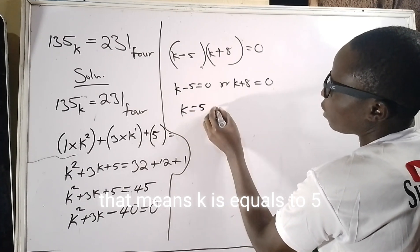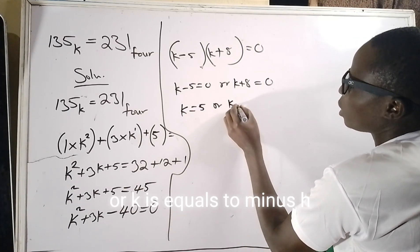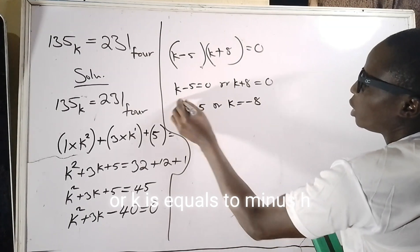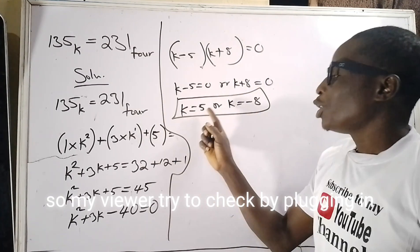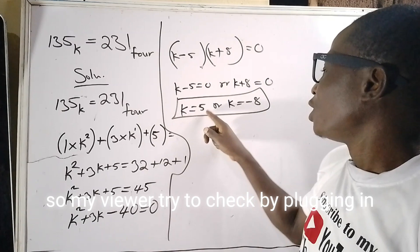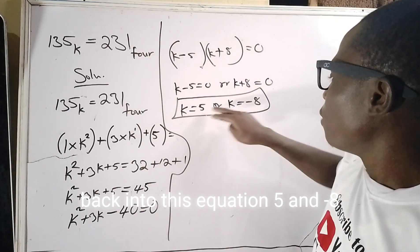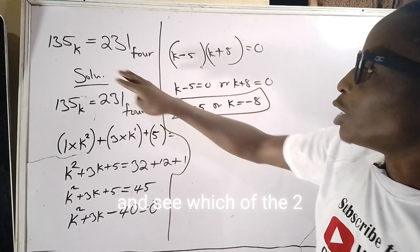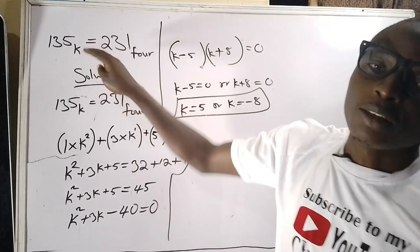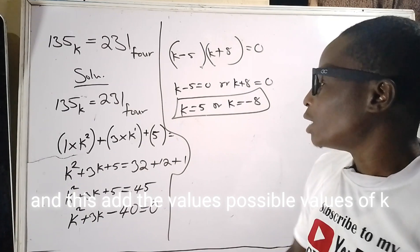So my viewers, try to check by plugging back into this equation 5 and minus 8, and see which of the two satisfy this particular equation. And these are the possible values of k that will satisfy this particular equation involving number bases.